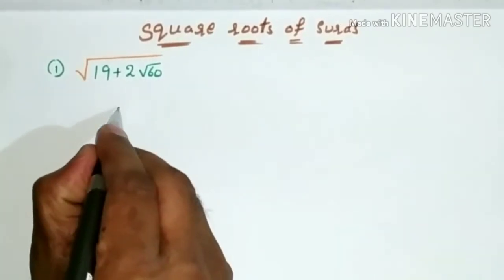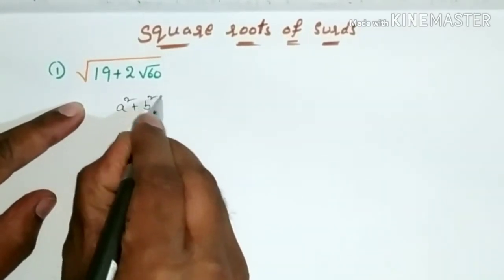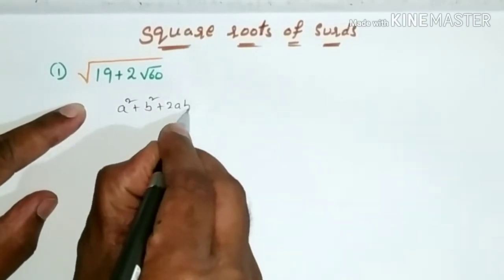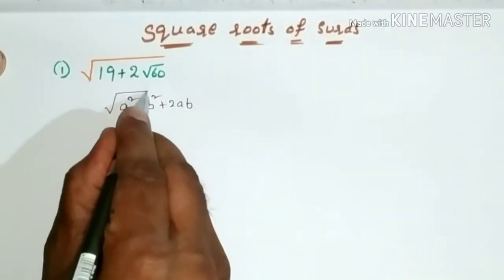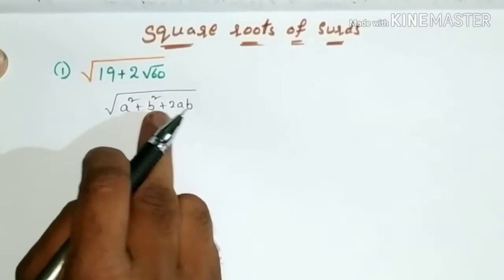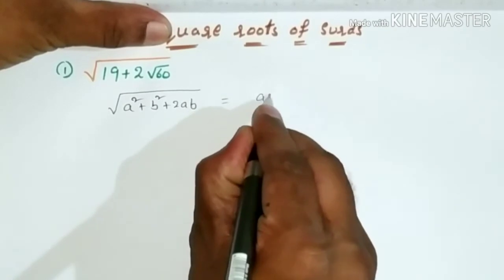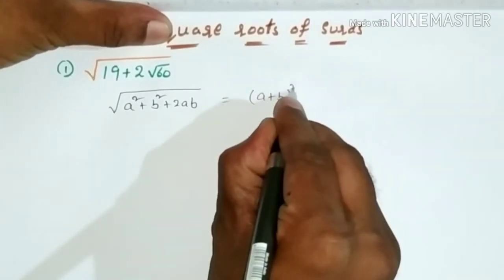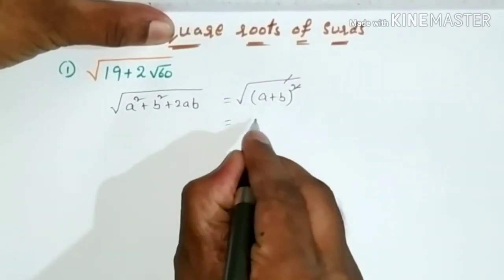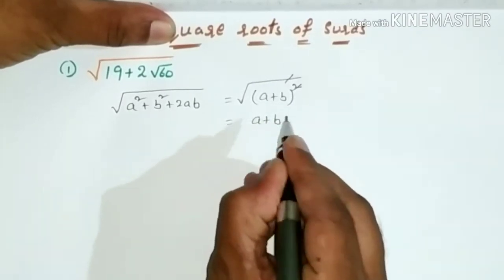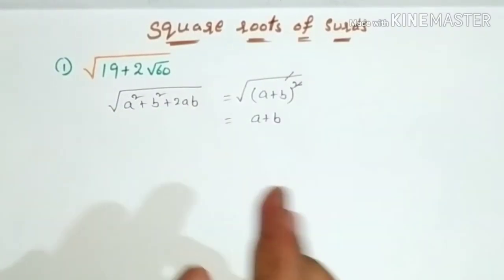I am taking the formula a² + b² + 2ab. To find its square root, we take the square root of a² + b² + 2ab. This can be written as (a + b) whole square, and the square and root get cancelled. Finally, the square root of a² + b² + 2ab equals a + b.